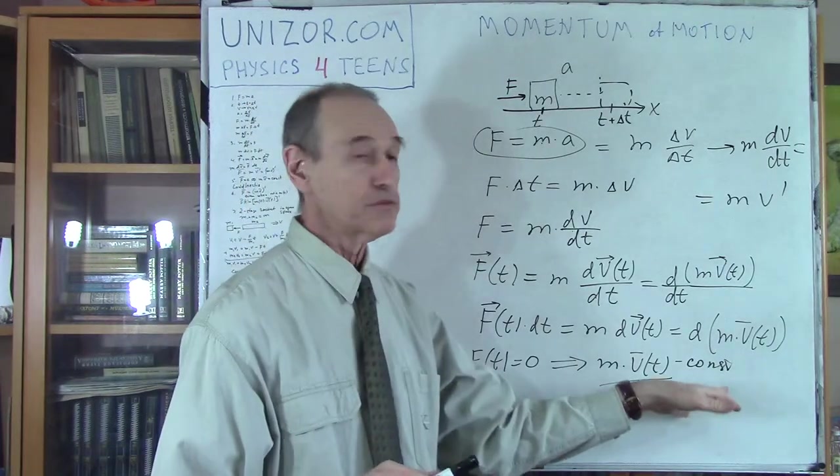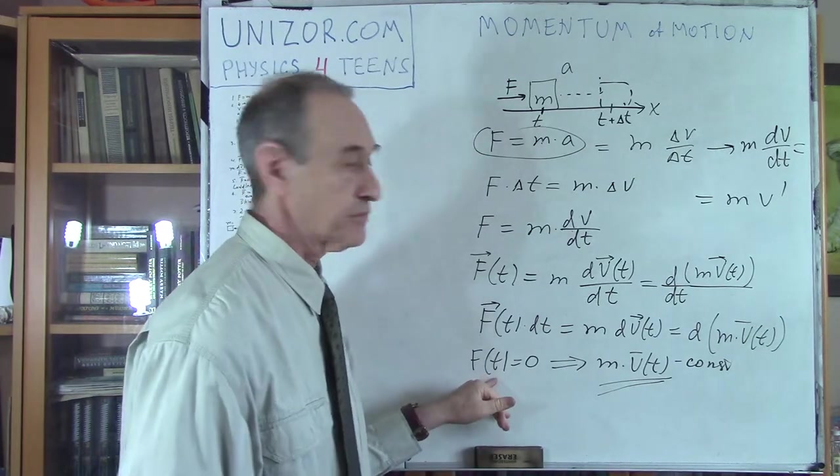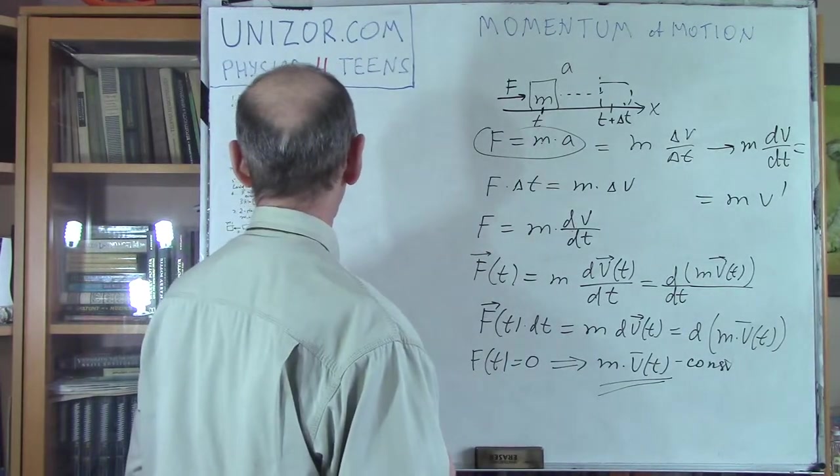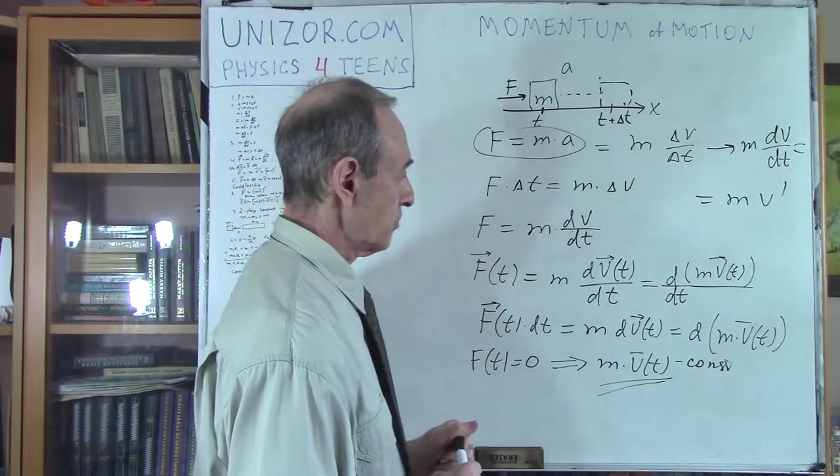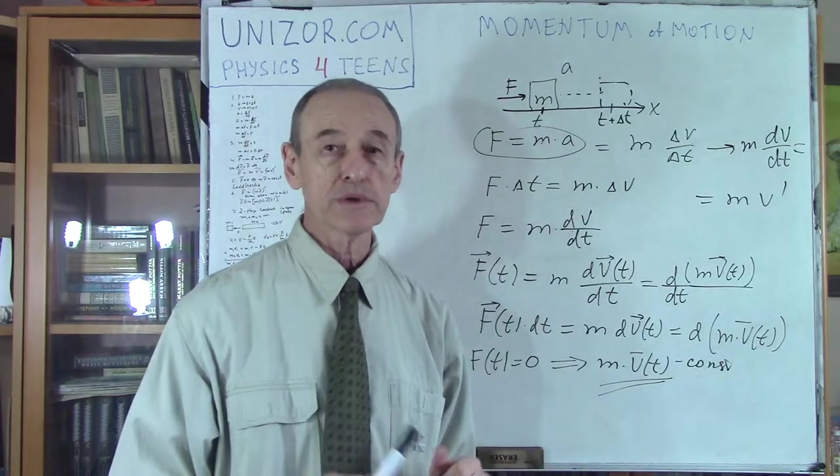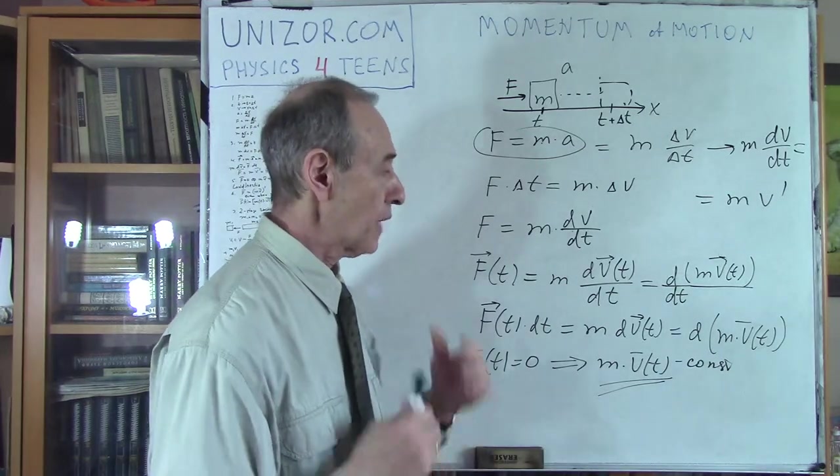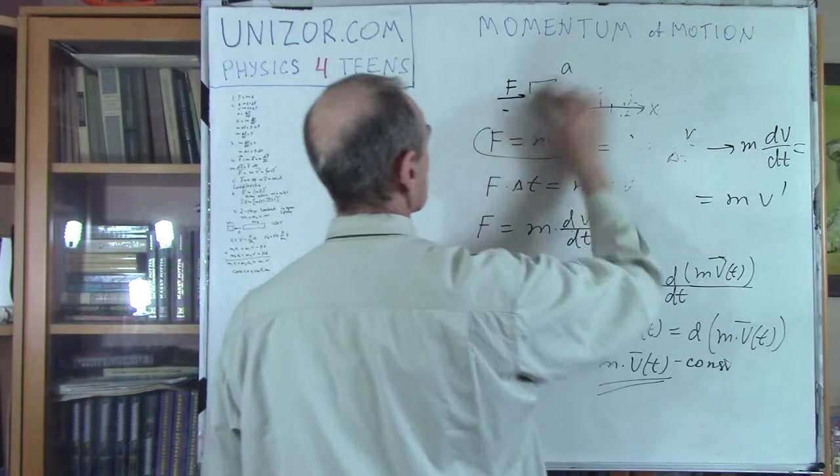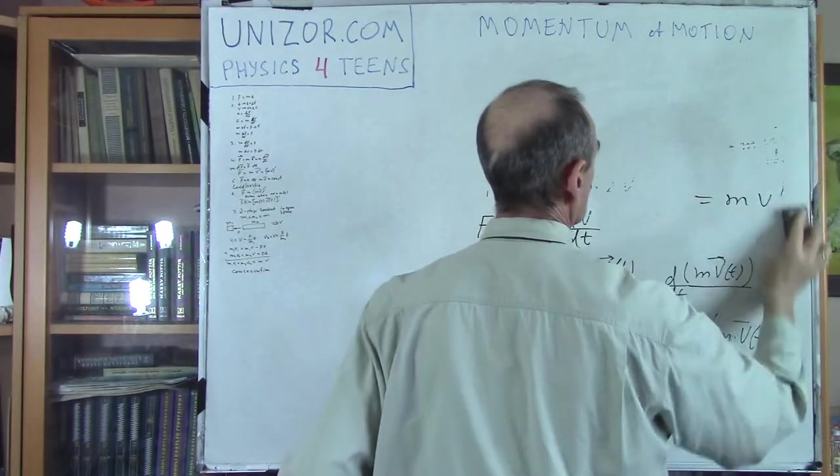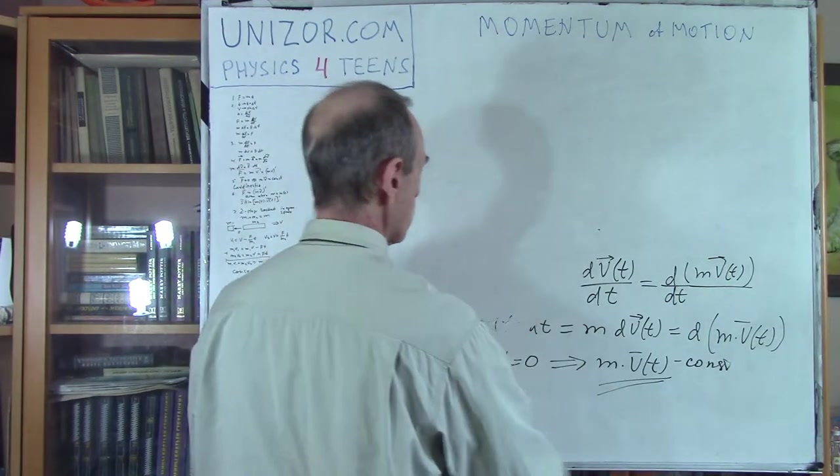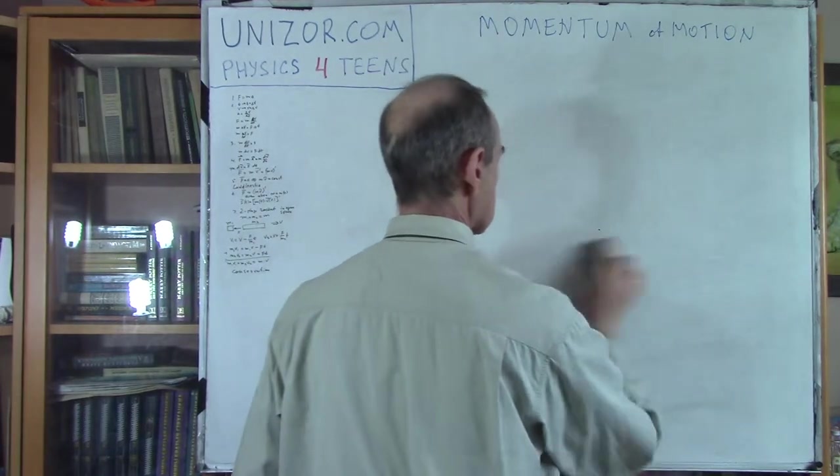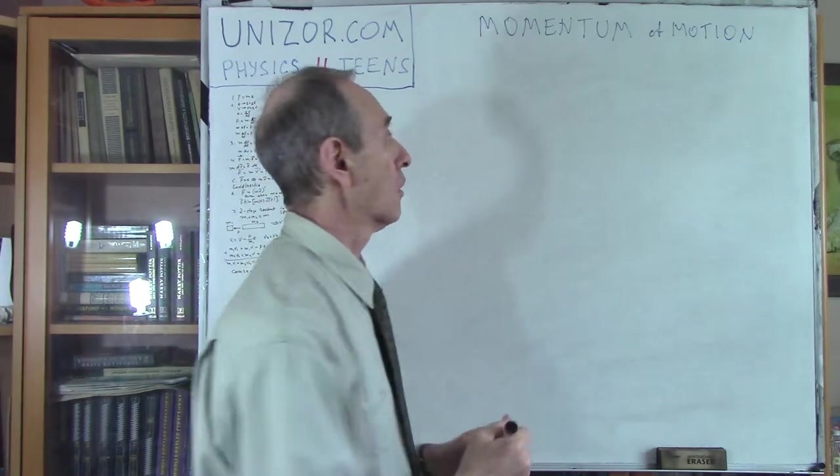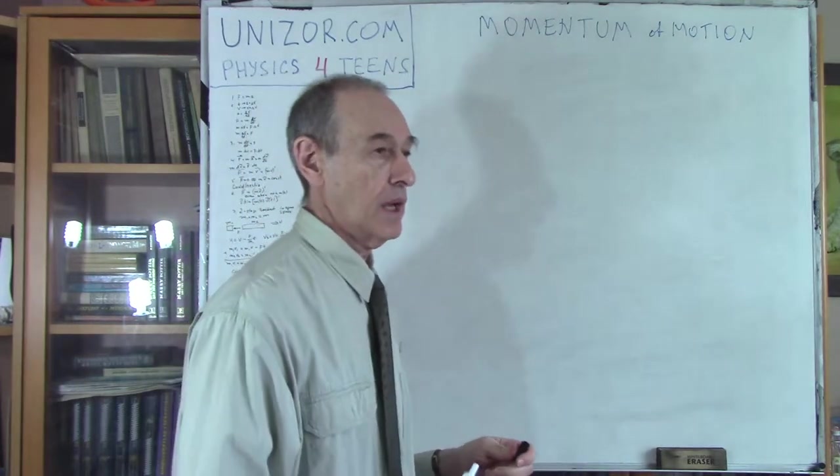If F(t) is zero, what follows is that M times V(t) is constant. What's also interesting is that in this particular notation, I do not really require M to be constant. So M also can be a function of t. There's nothing wrong with that. In any case, this particular quantity is called momentum of motion. We see that momentum of motion is not changing if there are no external forces. That's very important.